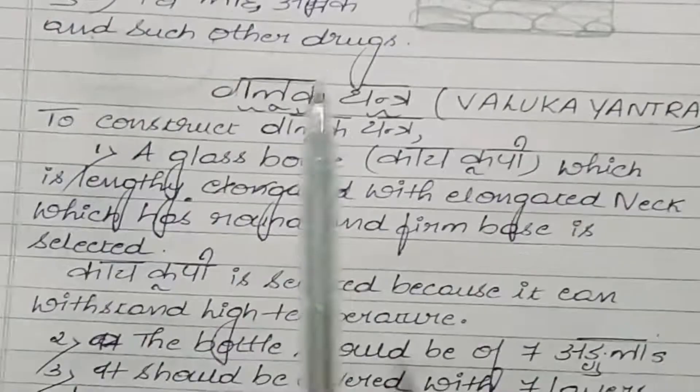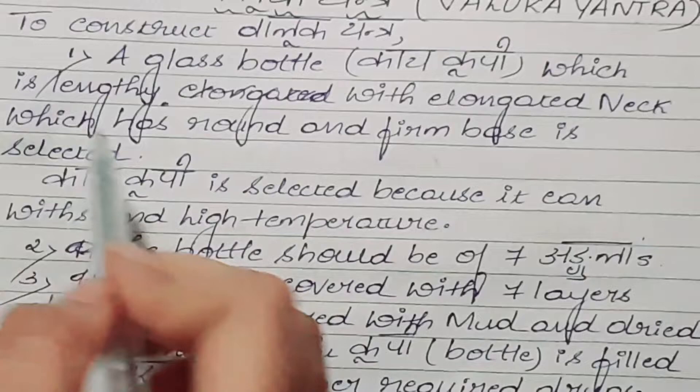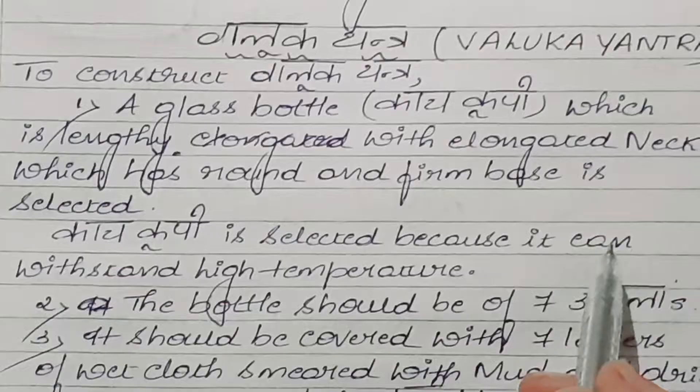Now coming to Valuka Yantra. To construct Valuka Yantra, a glass bottle, that is kachakupi, which is lengthy with elongated neck which has a round and firm base, is selected. Kachakupi is selected here because it can withstand high temperature.